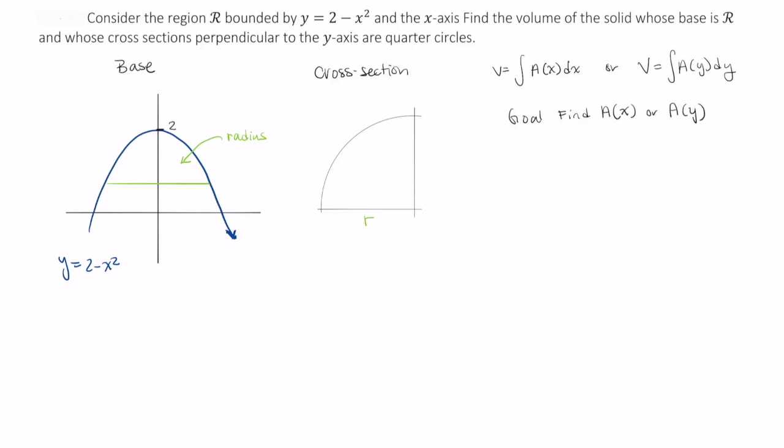So right now our goal is find area as a function of x or area as a function of y. So what is this smaller distance here? This smaller distance here is x. And this region is symmetric about the y-axis, so this distance here is also x. That tells me that r is equal to 2x. And now before we continue on writing out the area of this quarter circle, let's actually determine if we will be integrating with respect to x or with respect to y.